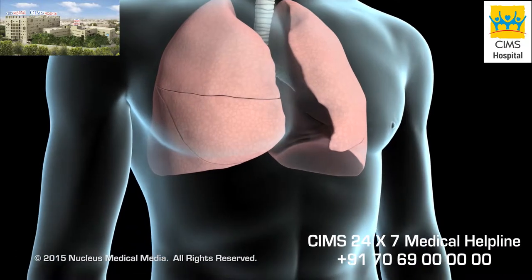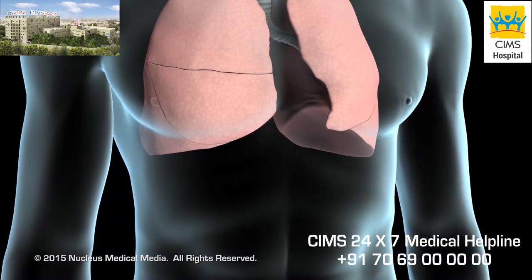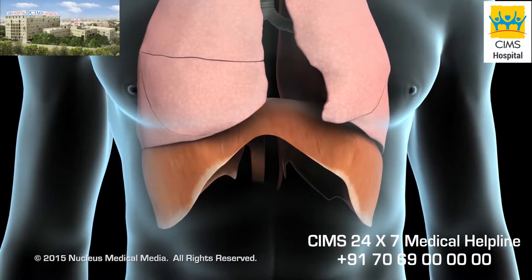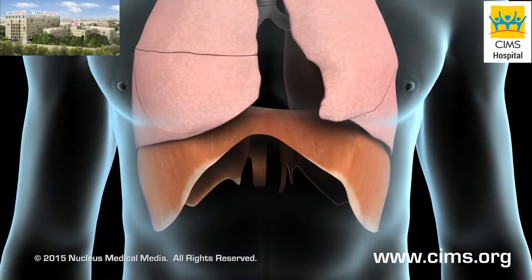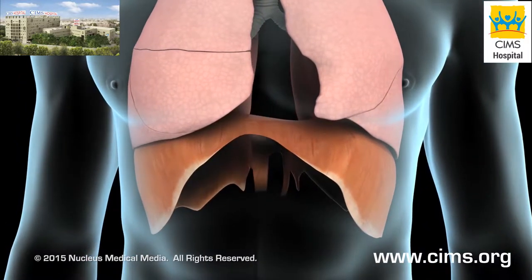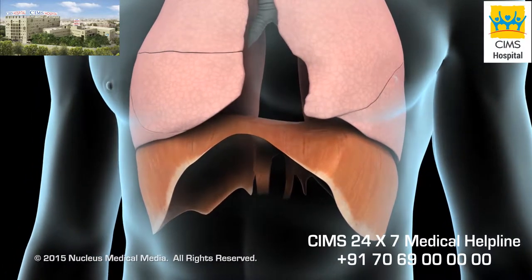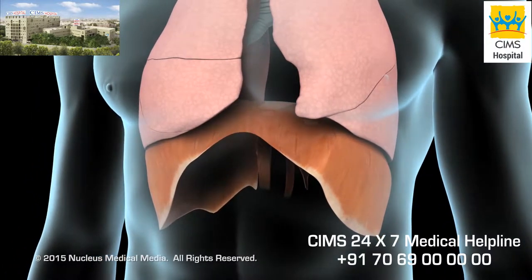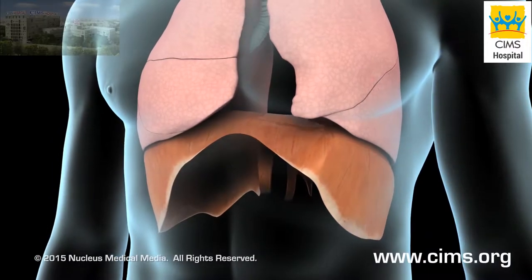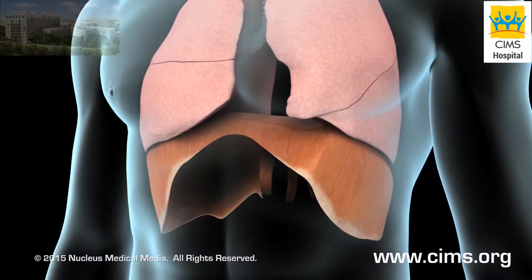When you breathe, air moves into your lungs when a muscle called the diaphragm, along with other muscles nearby, contracts and causes the chest cavity to expand. Air is exhaled when these muscles relax, and the lung tissue passively returns to its original size. This is called respiration.